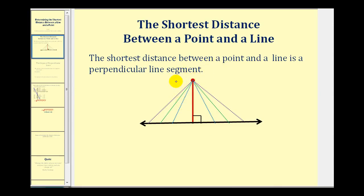A lot of times when you're solving a problem like this, they won't even say shortest distance. It'll be assumed that if you're finding the distance between a point and a line, that it is the shortest distance. So the key to solving a problem like this is determining the end point of the perpendicular segment. Once we find that point, we'll just use the distance formula to determine the length of this segment.